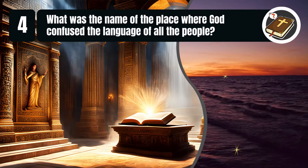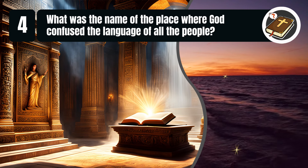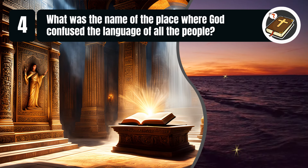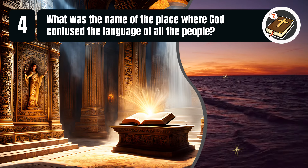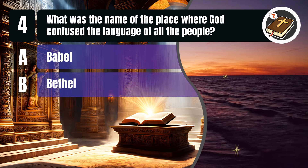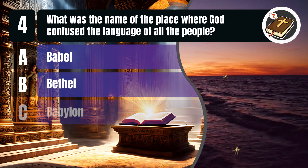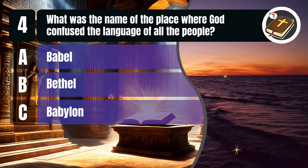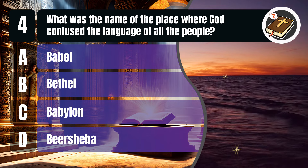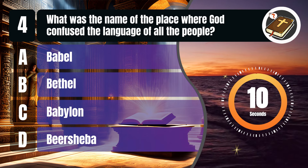Question 4. What was the name of the place where God confused the language of all the people? A. Babel. B. Bethel. C. Babylon. D. Beersheba. You get 10 seconds.